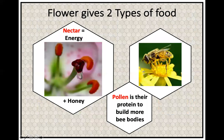Some of you may already know this. Let's talk about the symbiotic relationship between bees and flowers. Flowers give two types of food: nectar, which is an energy source — some bees, like the honeybee, turn that into honey, their carbohydrate. And they give pollen, which is their protein. They use pollen to build more bee bodies, often mixed with nectar and given to the very young.